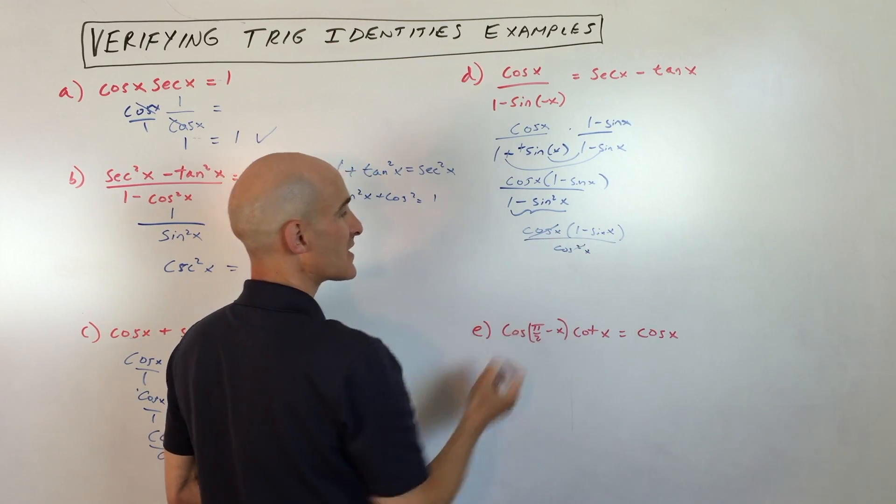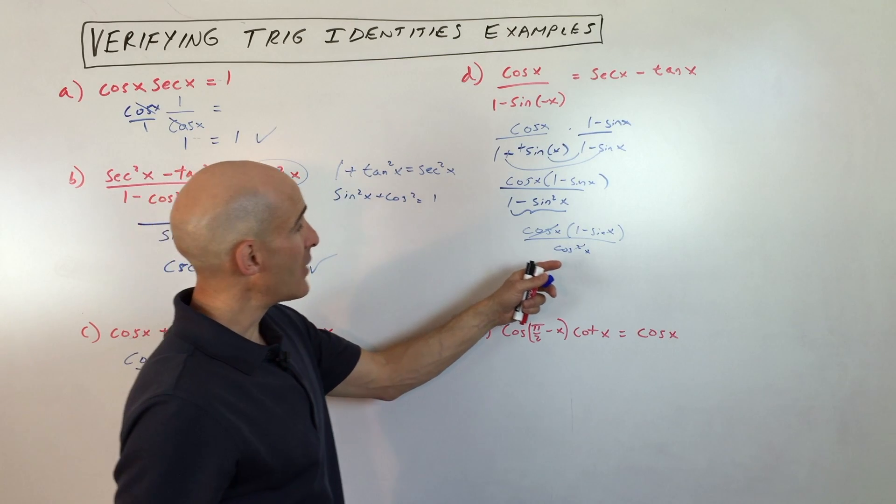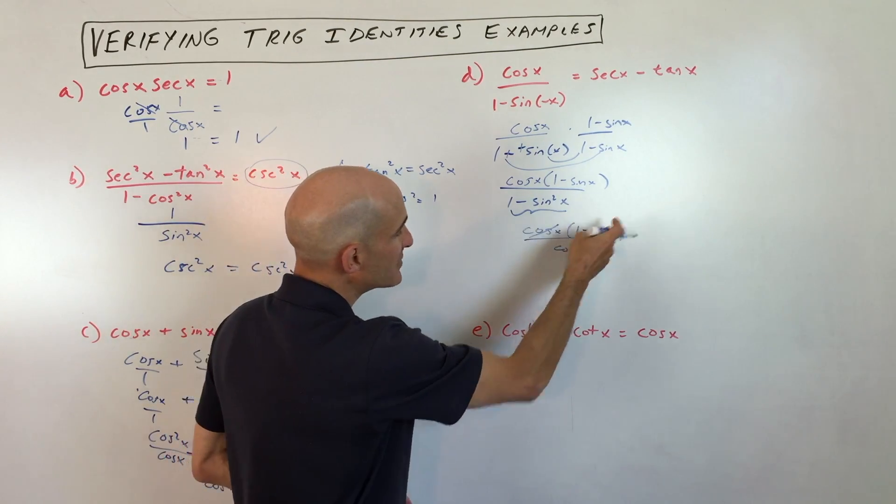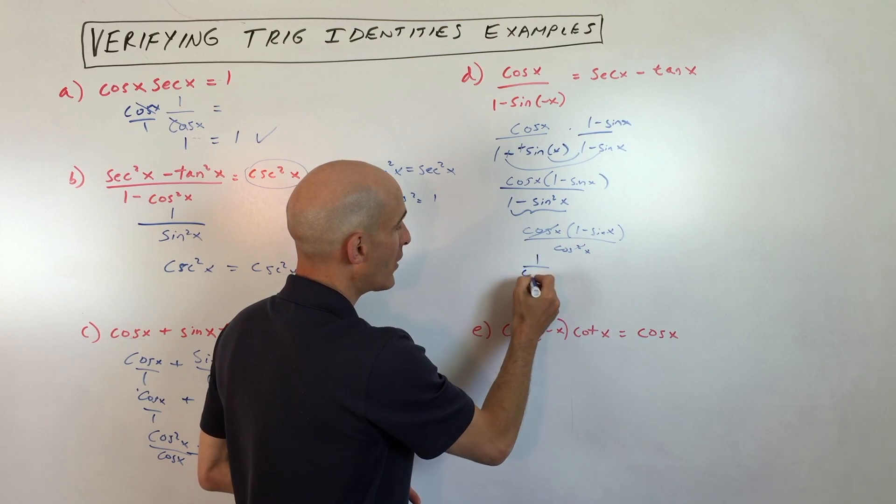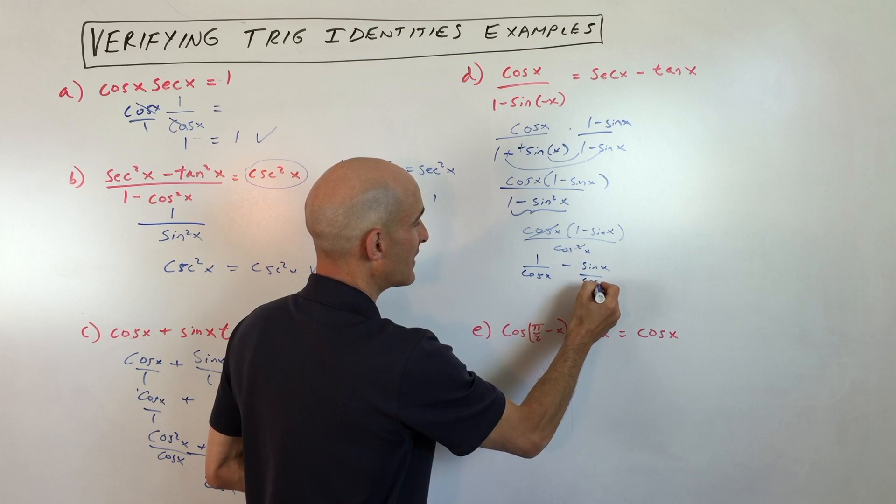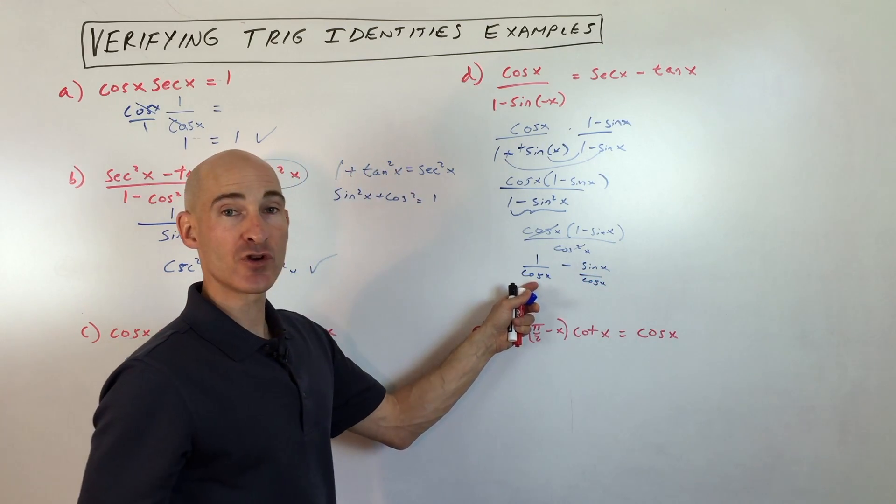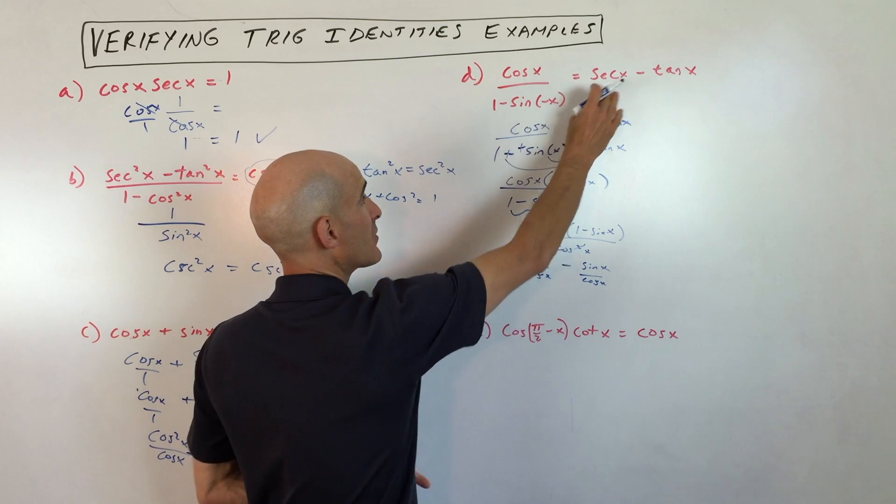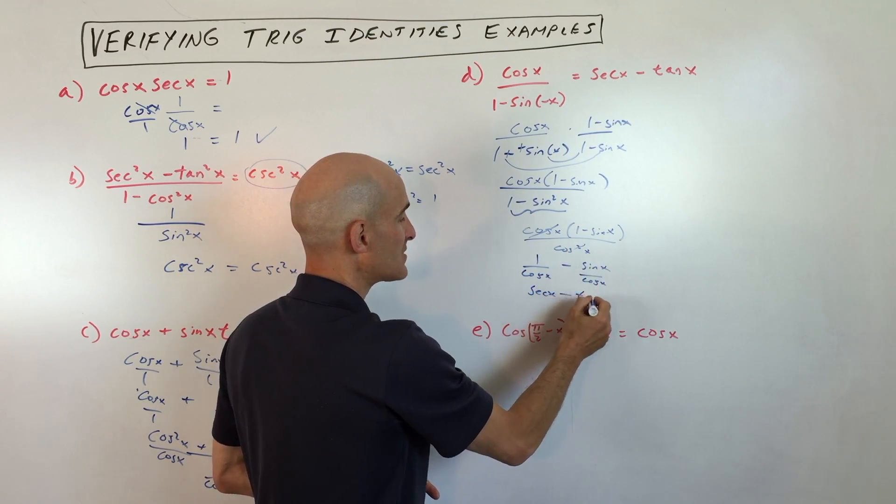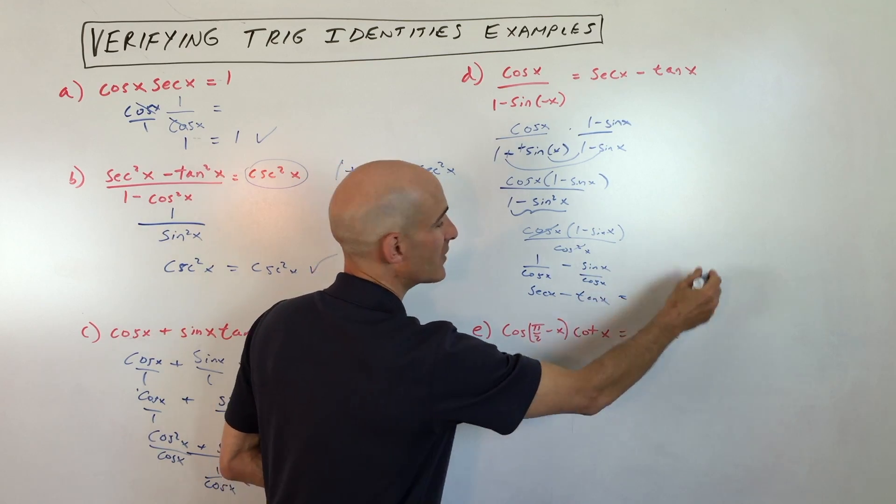And now you can see we have 1 minus sine x over cosine x. I'm going to split this up into two fractions. 1 over cosine x minus sine over cosine x. And you know that 1 over cosine, or the reciprocal of cosine, is secant. So there's our secant x. And sine over cosine is tangent x. So we proved it.